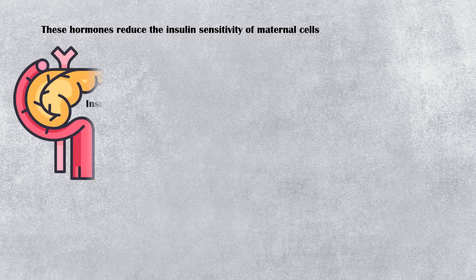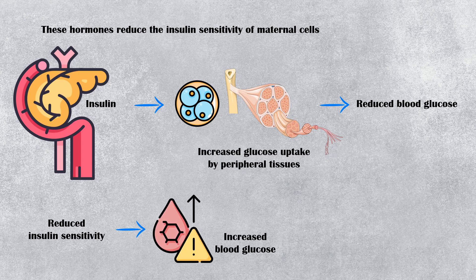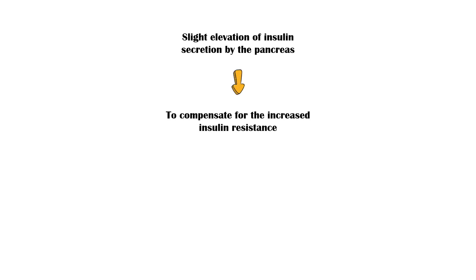The main function of insulin is to reduce blood glucose levels by enhancing its uptake from peripheral tissues. When the insulin sensitivity of cells is reduced, blood glucose level rises. This glucose is then transported across the placenta to fuel the growth of the fetus. In addition, during a normal pregnancy, there is a slight elevation of insulin secretion by the pancreas to compensate for the increased insulin resistance, and this will increase the pumping of glucose into maternal cells.